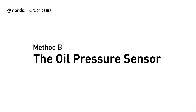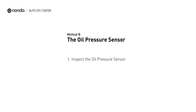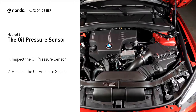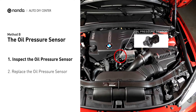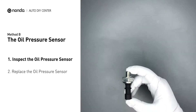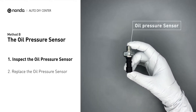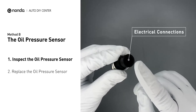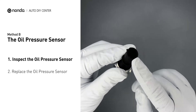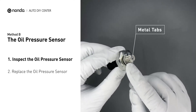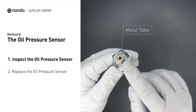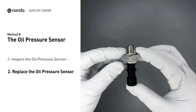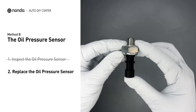Method B: the oil pressure sensor. The oil pressure sensor is most often mounted in the engine block or the cylinder heads. Carefully remove the oil pressure sensor from your vehicle. Visually check the oil pressure sensor's electrical connections and metal tabs for any damage. If damage is found, replace the oil pressure sensor.